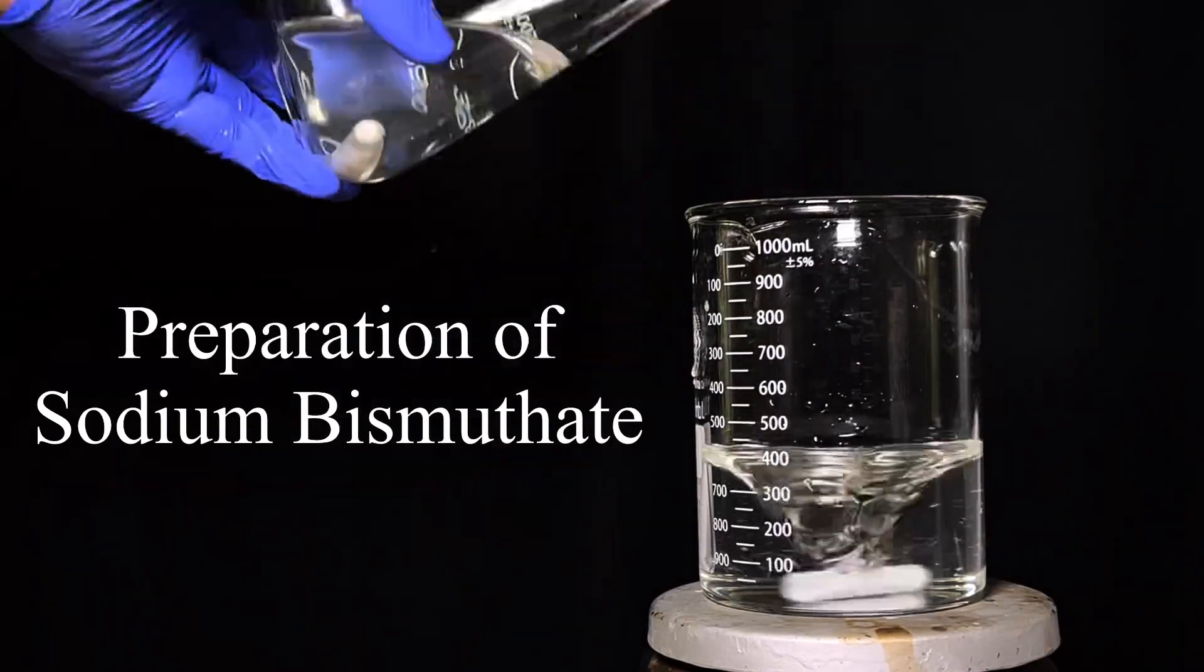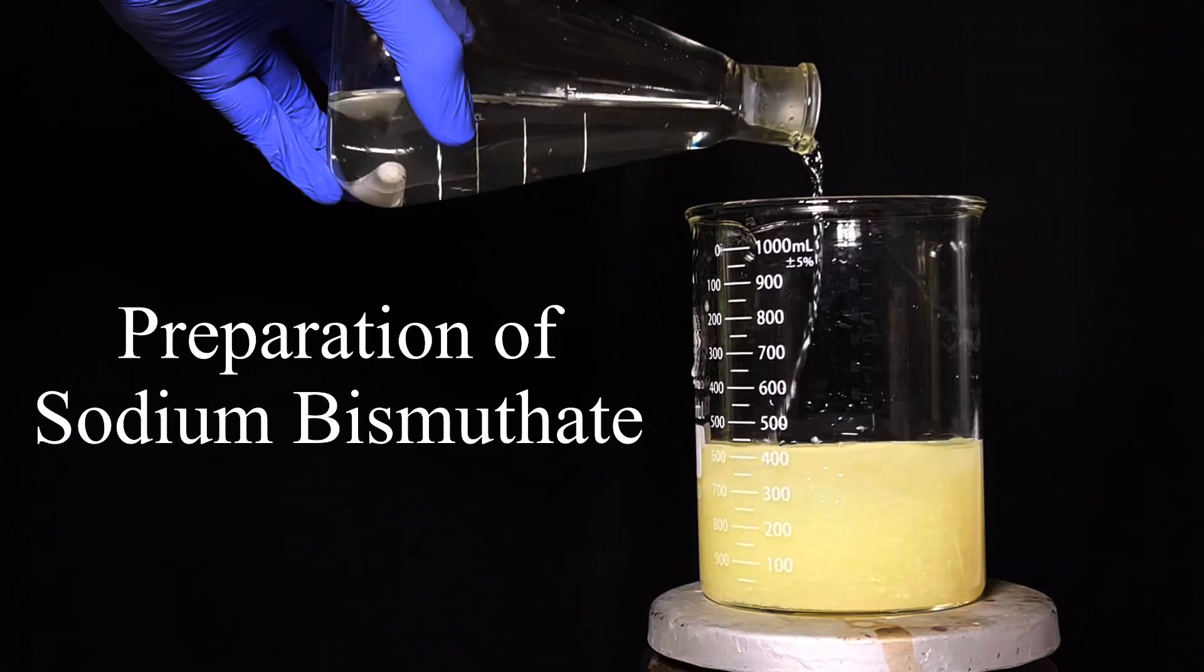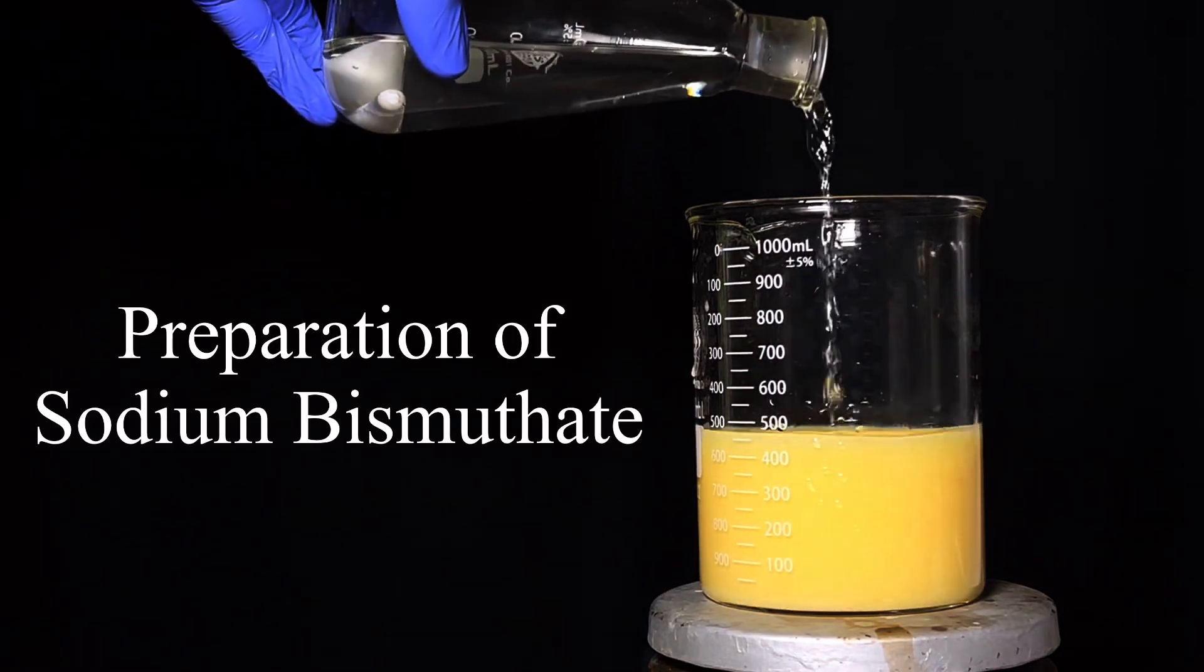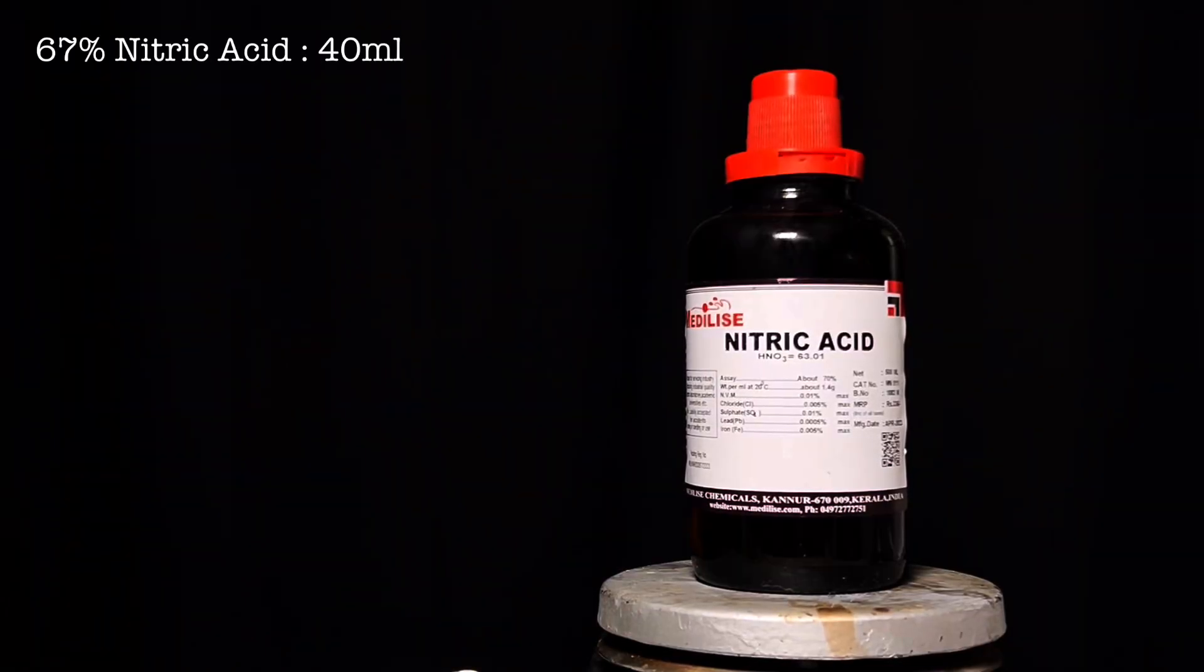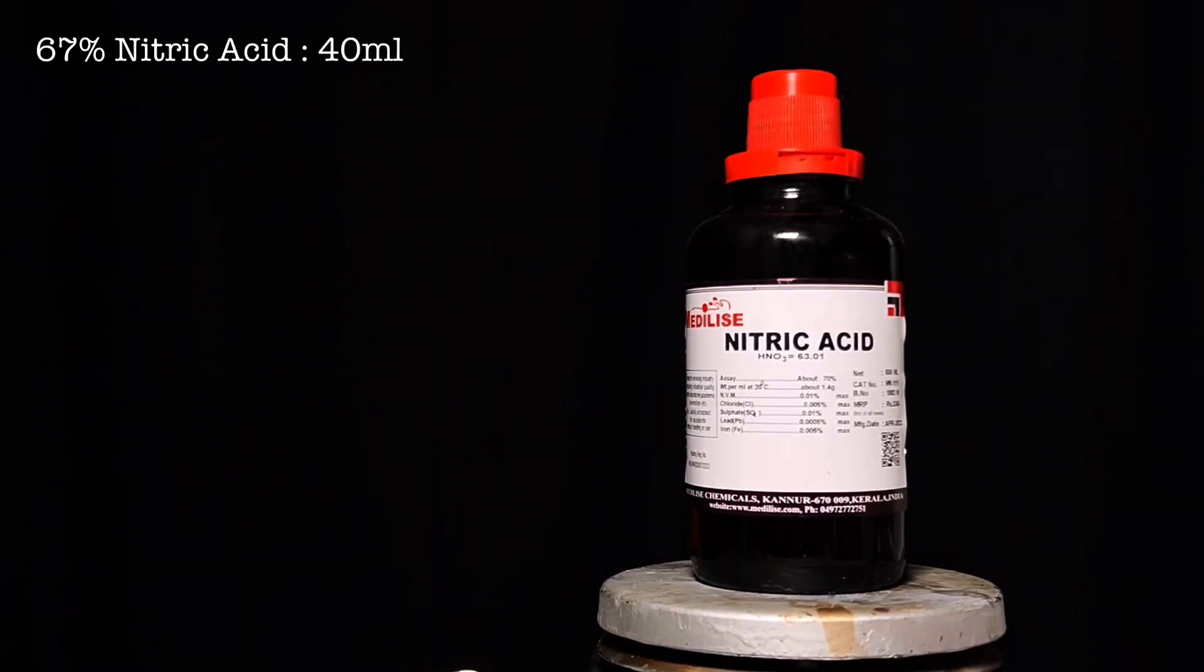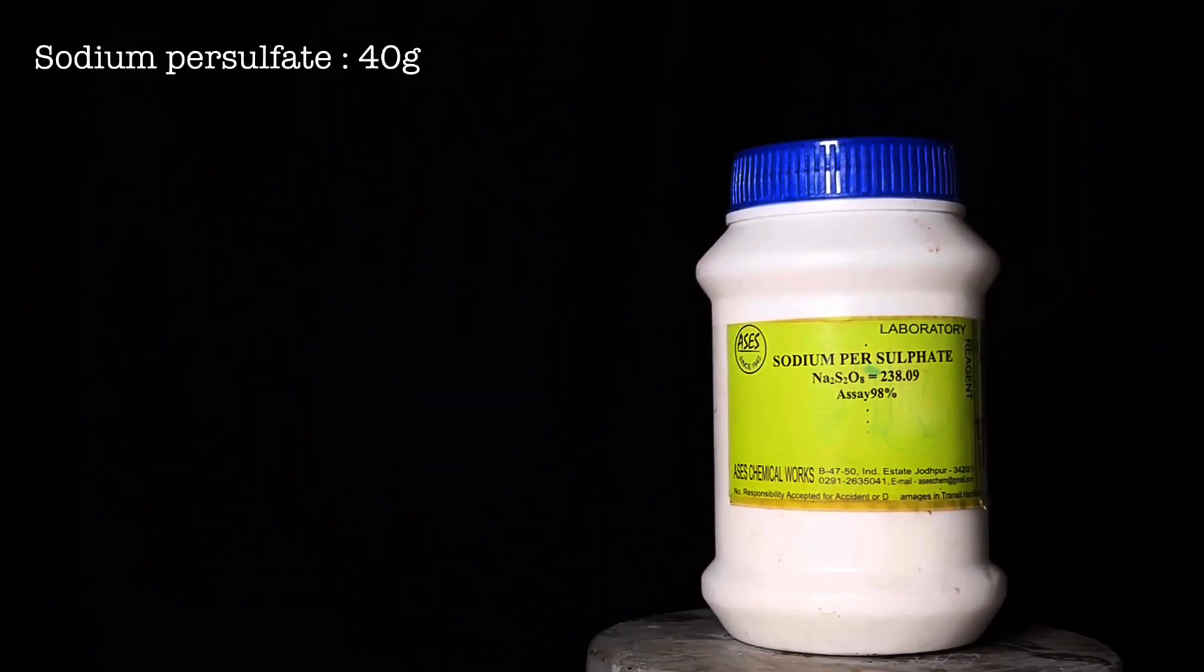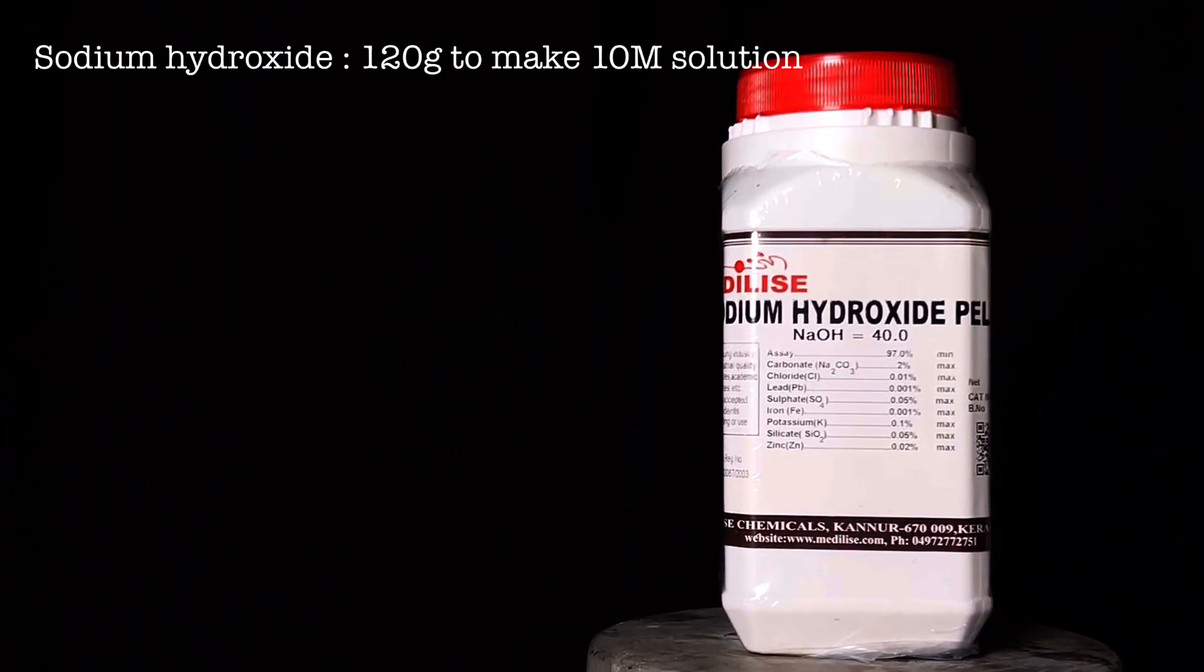Hello friends, in this video we will prepare sodium bismuthate starting from bismuth metal. For this preparation, we will need 17 grams of bismuth metal, 40 milliliters of 67% nitric acid, 40 grams of sodium peroxydisulphate or sodium persulphate, and 120 grams of sodium hydroxide to make a 10 molar solution of it.